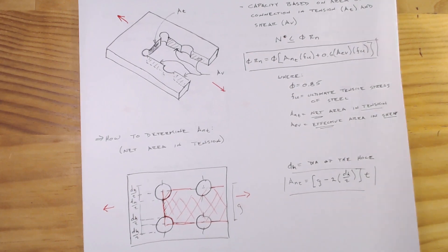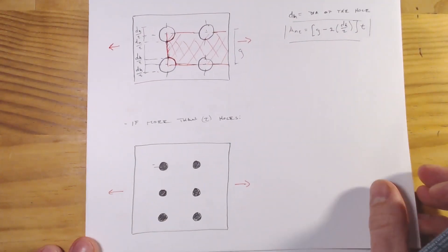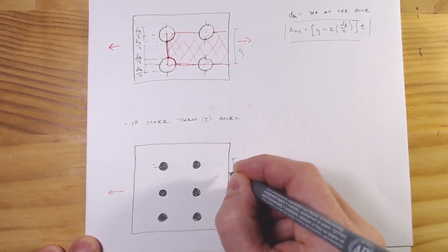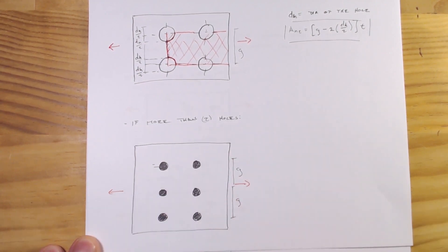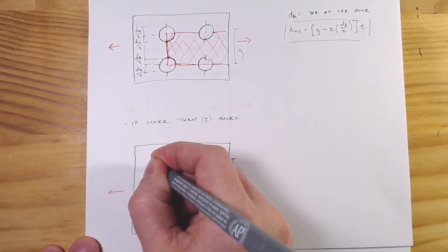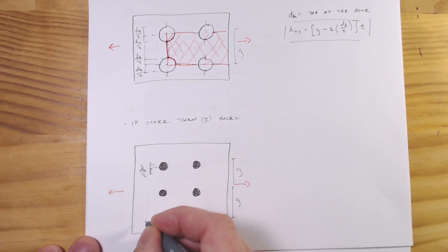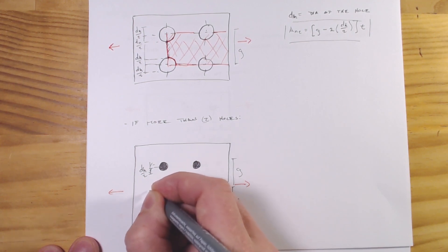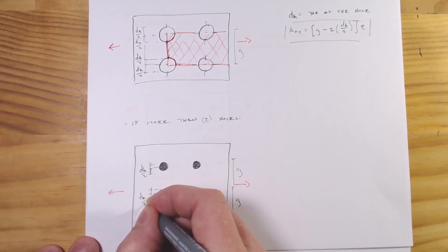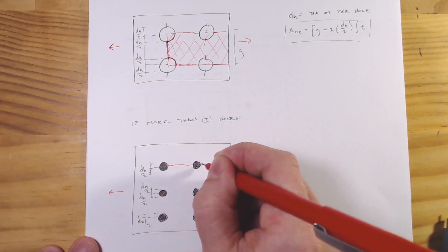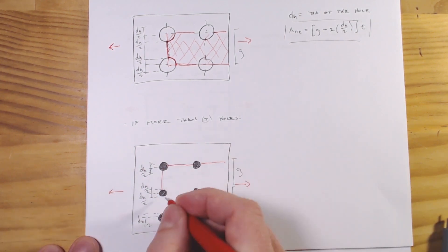All right, so that should hopefully be pretty straightforward. But what if we have more than two holes? So say we've got this arrangement here where each line of holes is spaced G away, and of course we would have d_h over two, d_h over two, and I'll go through and I'll write the d_h over two for all of these. And so if we want to draw in what our block shear would be, it would be coming around the outside of this whole block that we would be looking at.